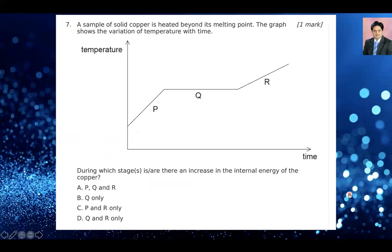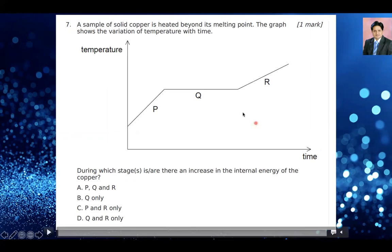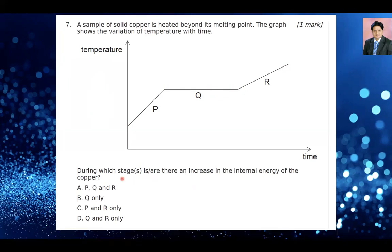Let's go over question number 7. A sample of solid copper is heated beyond its melting point. The graph shows the variation of temperature with time. The temperature increases, then at a certain point the change of phase starts — this is where melting is happening. During this entire time there is a change in phase, and after that the temperature increases again. When the temperature remains constant, there's a change in phase. The question asks: during which stages is there an increase in internal energy of the copper?